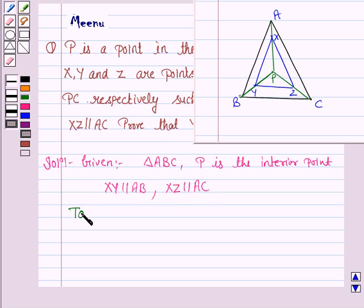Let's now write what we have to prove. We have to prove that YZ is parallel to BC.